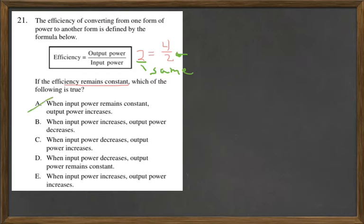How about B? When input power increases, so that's the bottom number denominator, so let's do that.